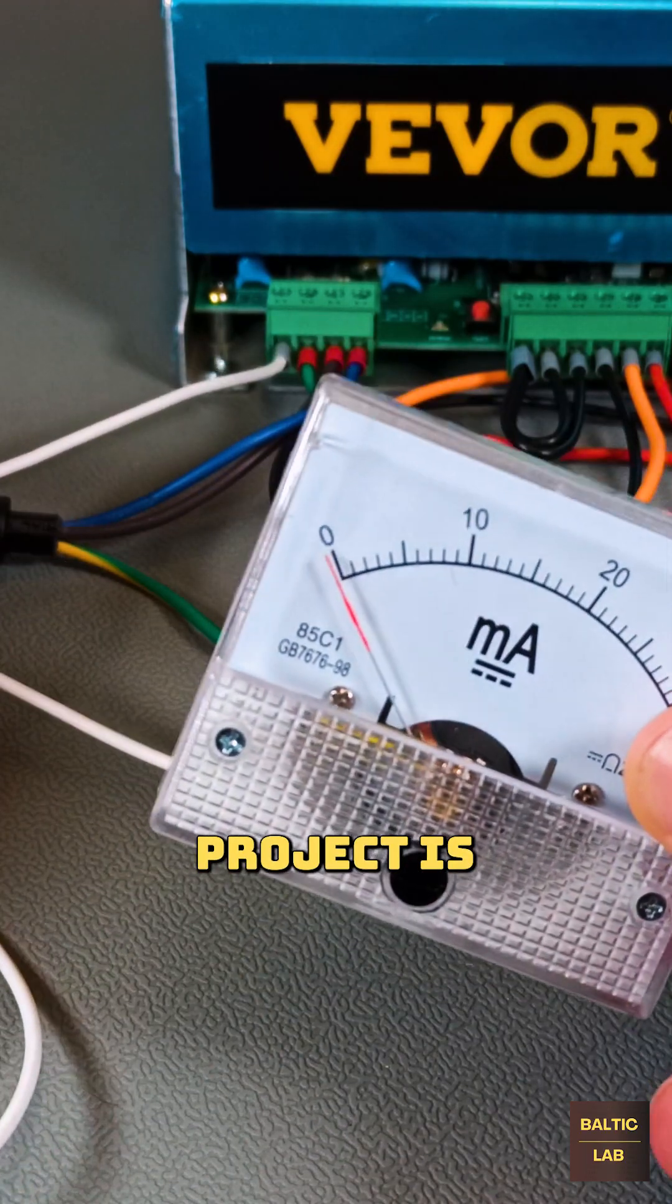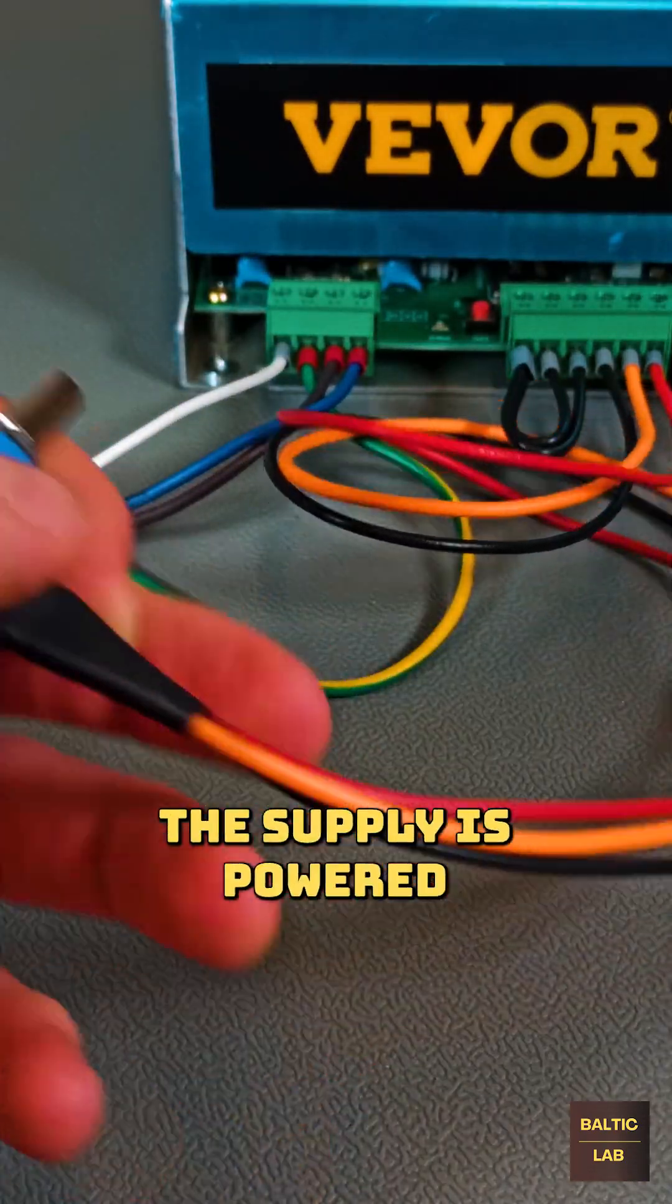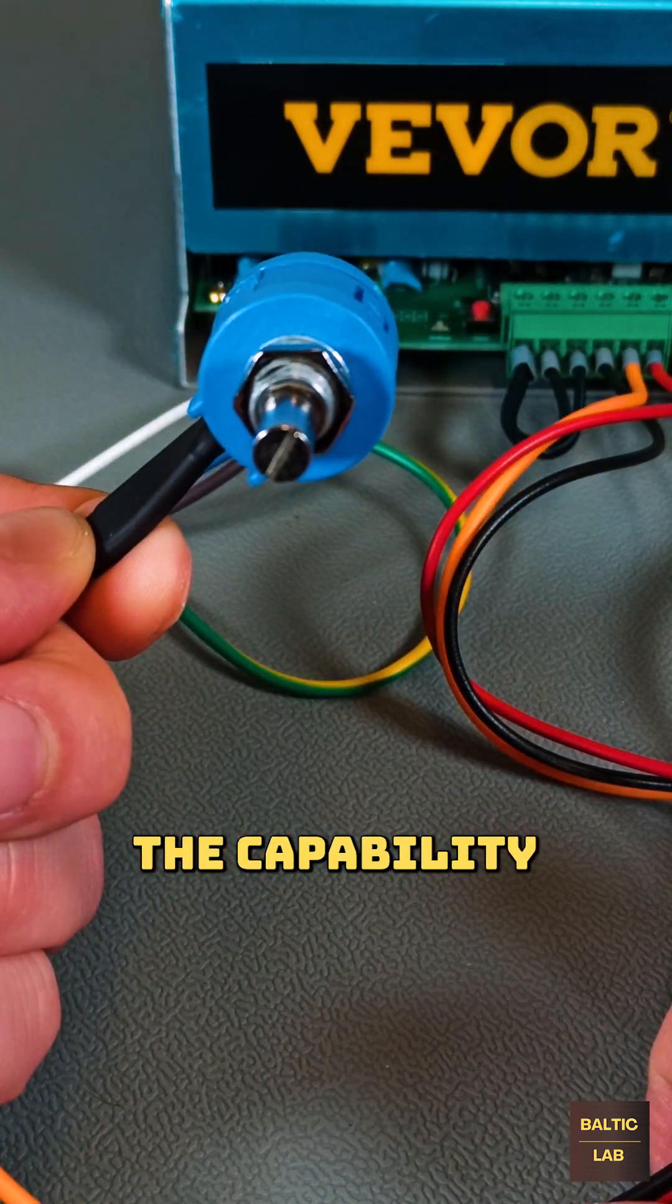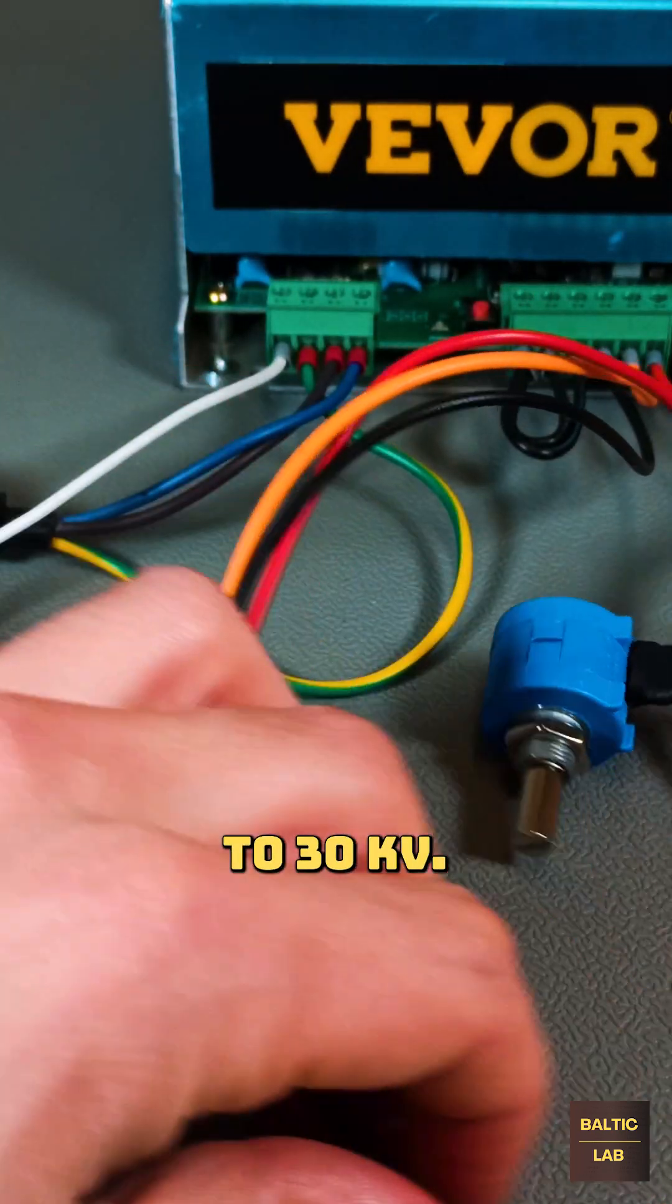The foundation for this project is a commercial adjustable laser power supply. The supply is powered directly from mains voltage and has the capability of outputting an adjustable output voltage of up to 30 kilovolts.